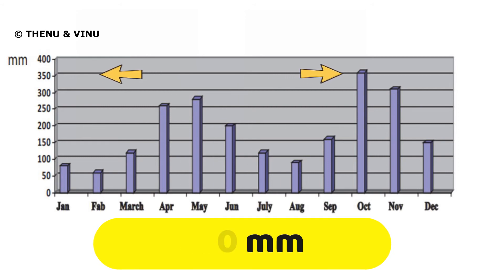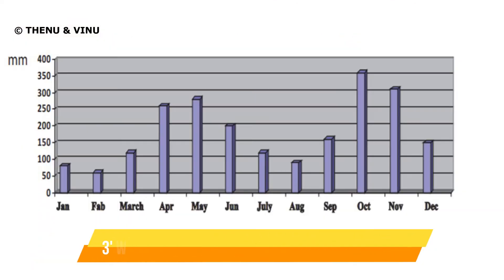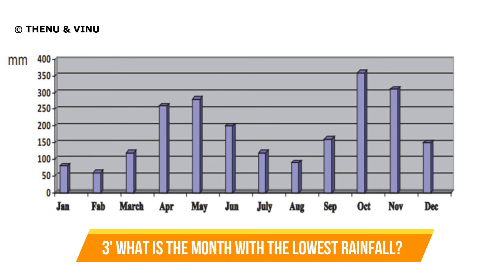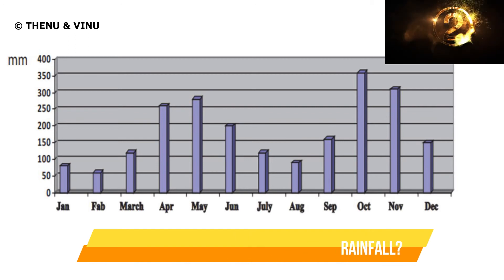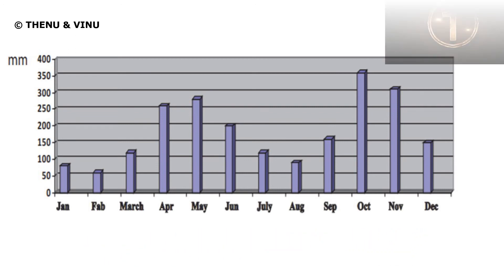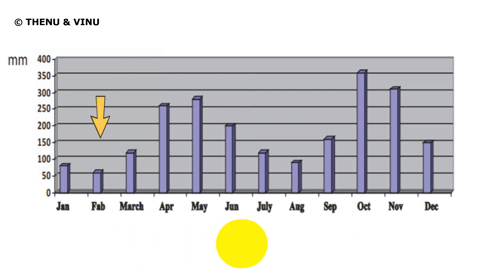The next question is: what is the month with the lowest rainfall? We will give five seconds to answer. The answer is February, because in the graph you can see that February is the least — the line has only gone up to 50.